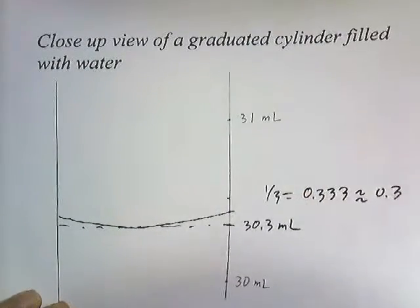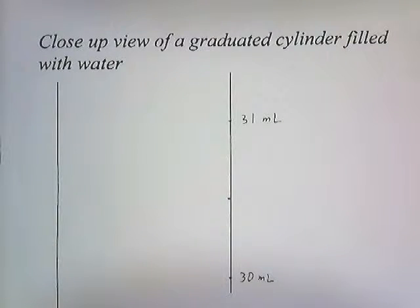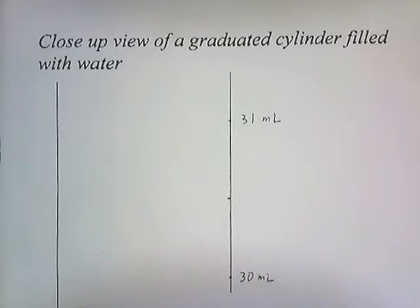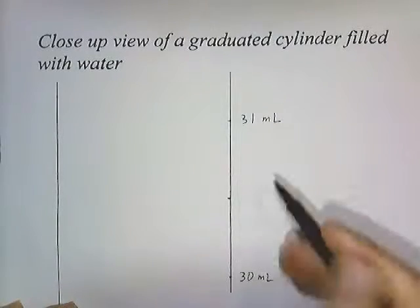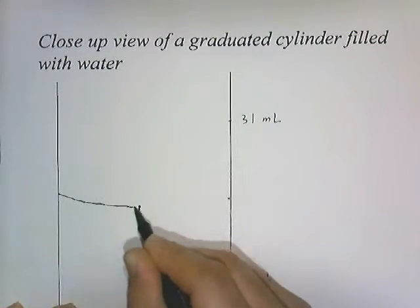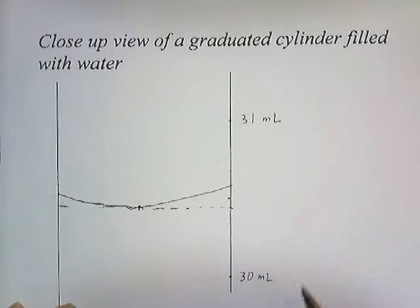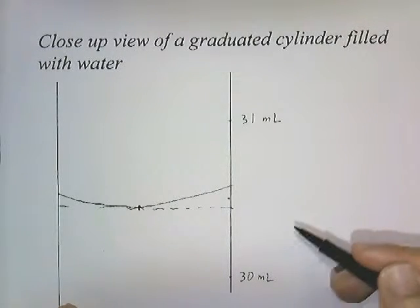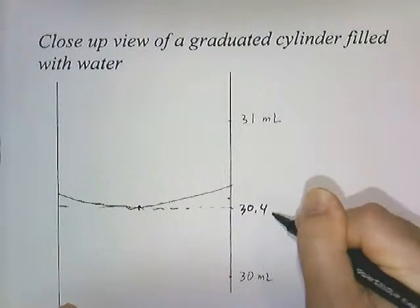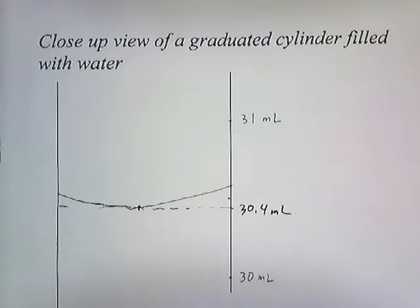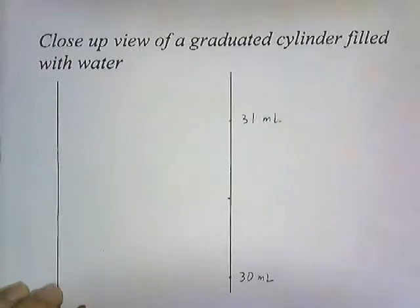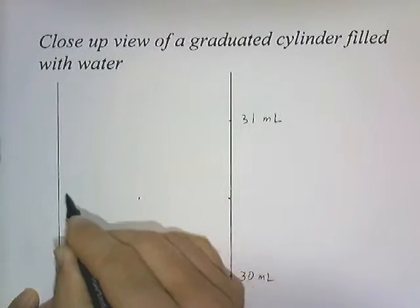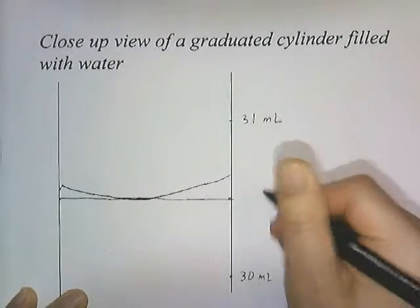Let's say that it's just short of being halfway. Here's halfway, and a little bit below that is right there. It's just short of the halfway mark. Halfway is .5, and just below .5 is .4, so let's call this 30.4 milliliters. And if it was at the halfway mark, we would call it 30.5.